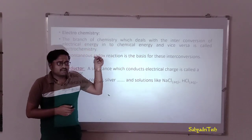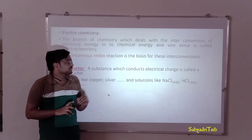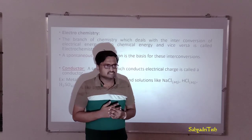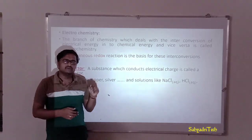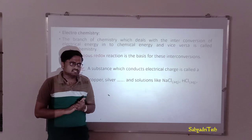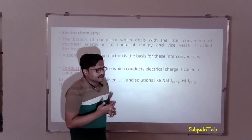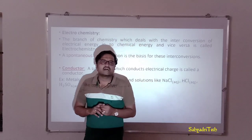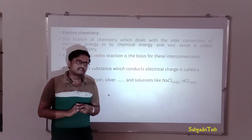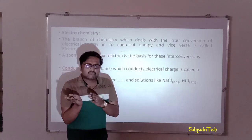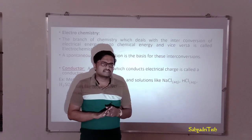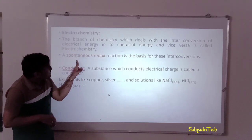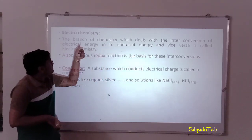According to the electronic concept, reduction means the gain or addition of one or more electrons to a chemical species. On the other hand, oxidation refers to the loss of one or more electrons by a chemical species. In a redox reaction, one chemical species loses electrons while another accepts electrons, meaning electrons are transferred from one chemical species to another. This movement of electrons generates electrical energy, making spontaneous redox reactions the basis for interconversion of electrical and chemical energy.